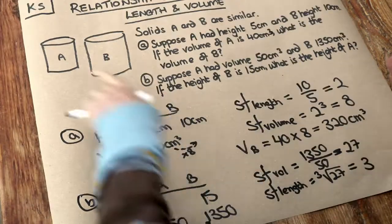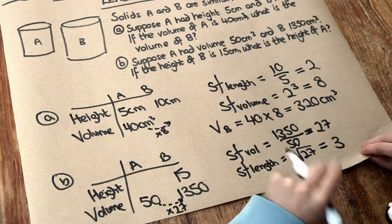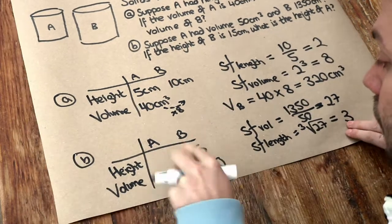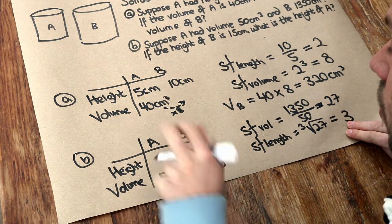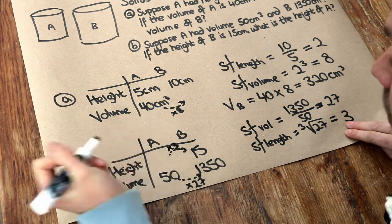So that means any lengths going from A to B are going to become 3 times as big. So, if the new height is 15, what would have been the original height if we're timesing all the lengths, such as height, by 3?